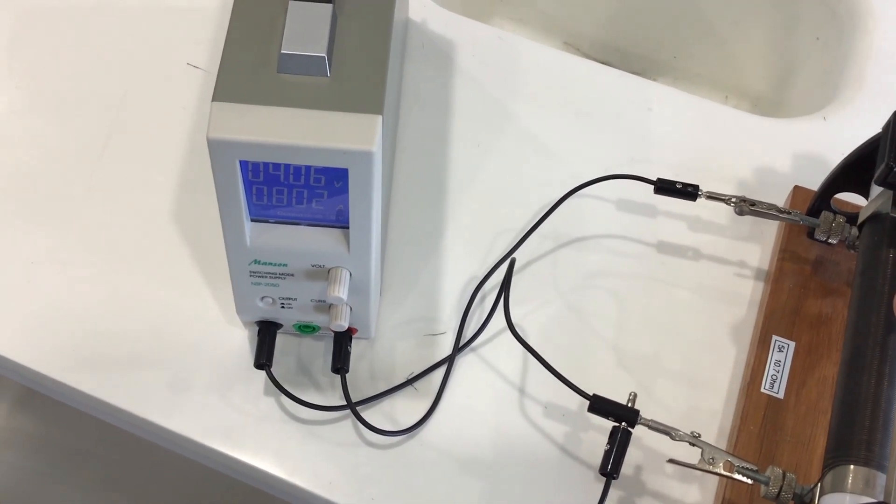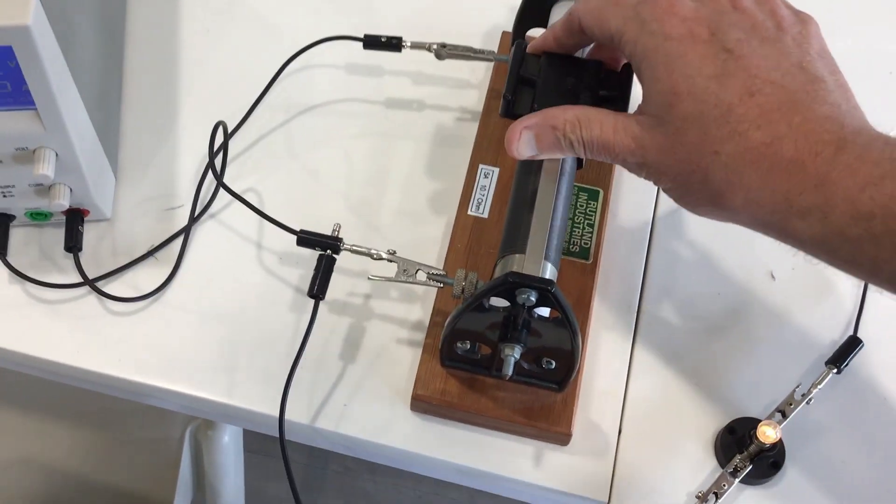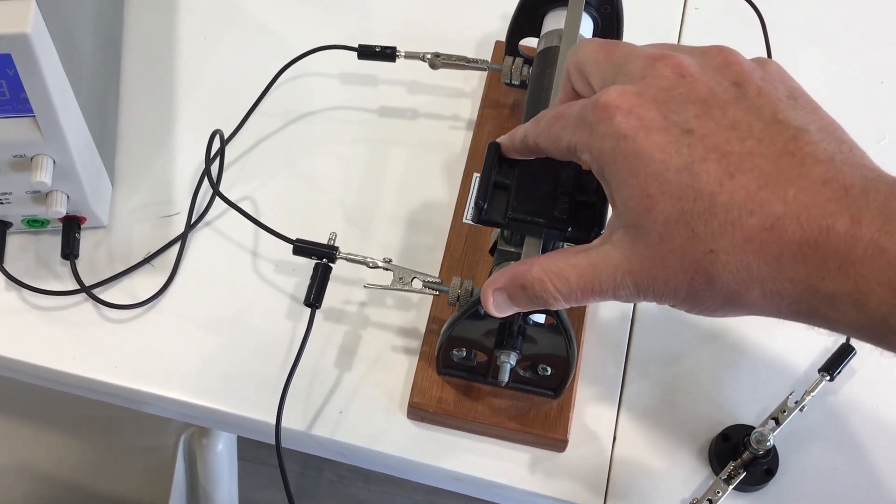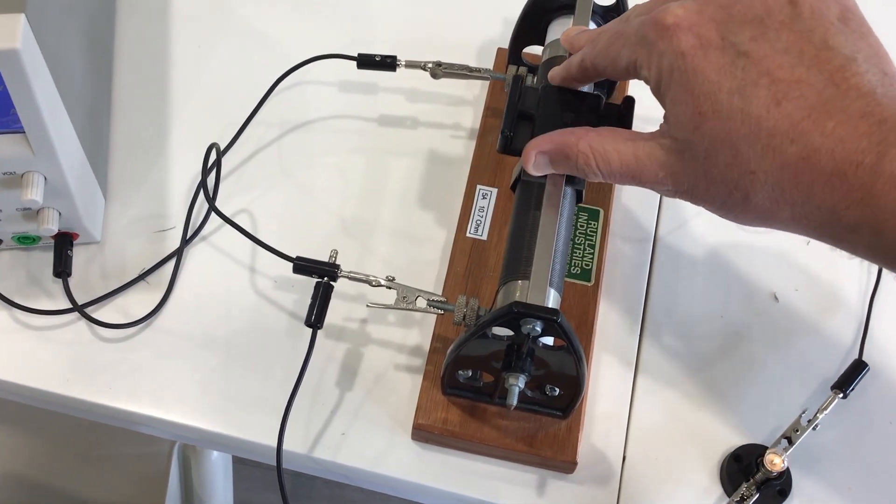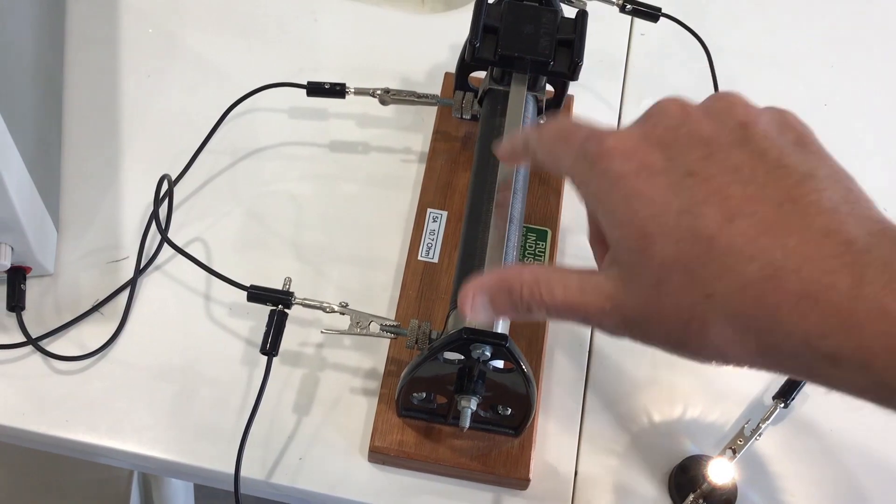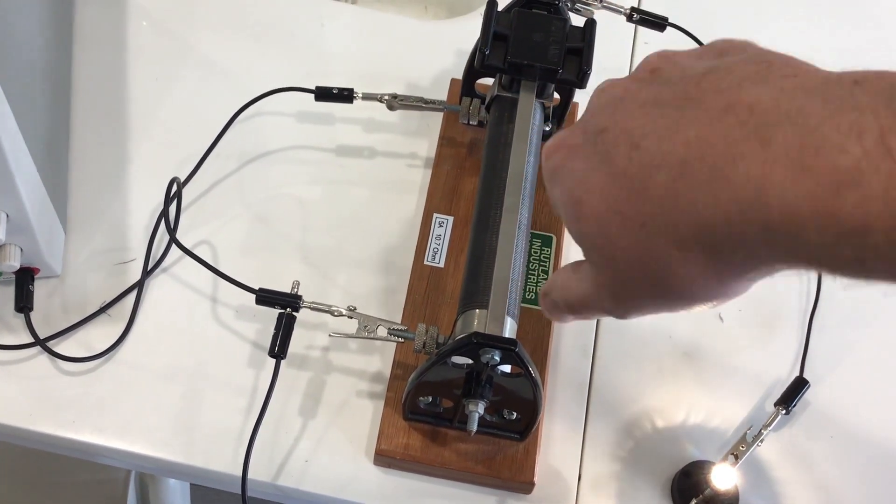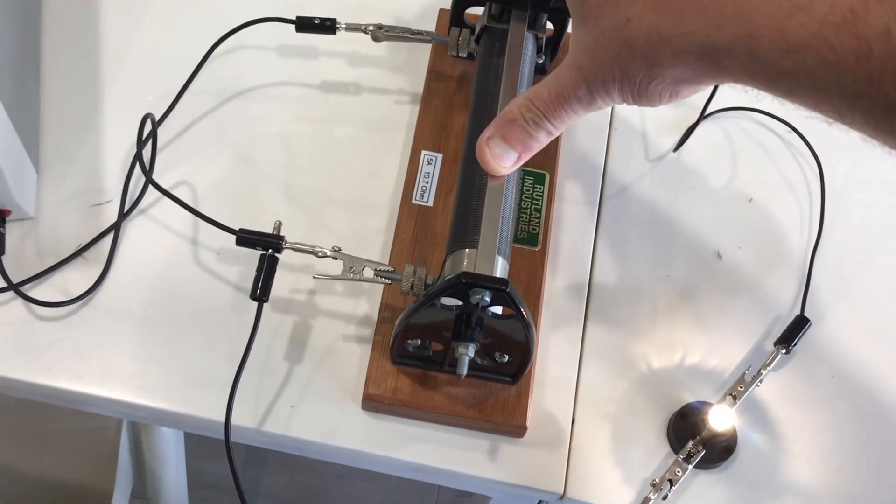The current does change, the current leaving the power supply will change, but the voltage leaving the power supply won't. This is what's happening inside your house if you've got one of those light switches that you rotate. Basically the slider is actually moving across a piece of resistance wire or something like that.